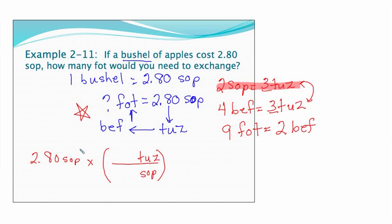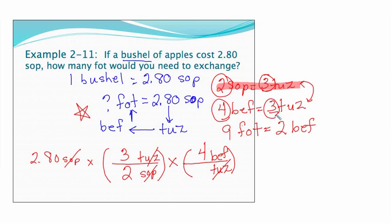I want to get rid of sops and go to tuss. We've mapped it out already. There's my conversion factor: 2 sops equals 3 tuss. Since I've set up my sops to cancel, I just look up there and find the values. Now I want to get rid of tuss and go to befs. My conversion tells me to put a 4 in front of the bef and a 3 in front of the tuss. If I stopped here I'd be at befs, but I can't stop because the question asked for fots and I'd only get partial credit. I want befs in the denominator. Now I finally get to fots. There's nine fots equal to two befs, and hopefully you got 25.2 fots.